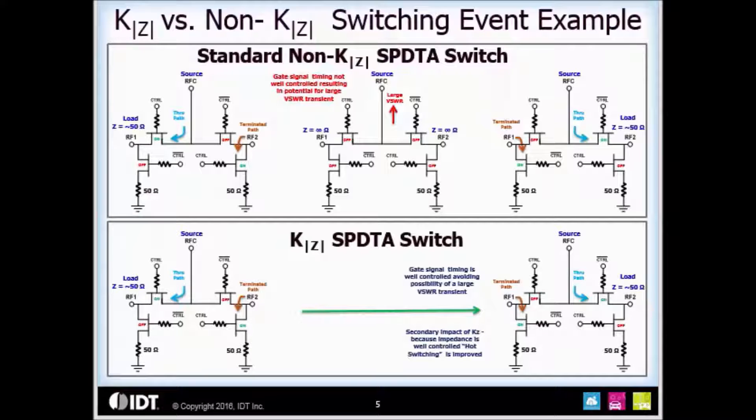Now let's look at the K|Z| switch example on the bottom. K|Z| controls the sequencing of the individual gate control signals when switching RF ports such that the FETs are neither on or off all at the same time. This results in maintaining a near constant impedance during the switching event. Because the impedance is controlled, there's no VSWR transient or stress on the switch itself.